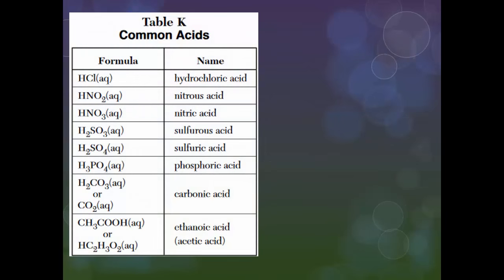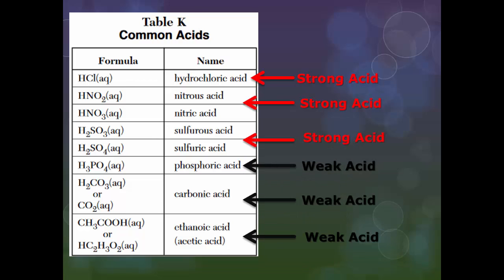So using your reference table, table K. Table K is going to be great for you guys, because this is where you're going to see a lot of the formulas and names for different types of common acids that will be asked on the Regents. Looking at this list, we can categorize which is weak and which is strong by the very simple rule. Everything on the top, HCl, HNO2, HNO3, H2SO3, and H2SO4, are all what we call strong acids. Everything beneath sulfuric acid, which is phosphoric, carbonic, and ethanoic, otherwise known as acetic acid, are all classified as weak acids. I suggest that you guys write these down in your reference tables.